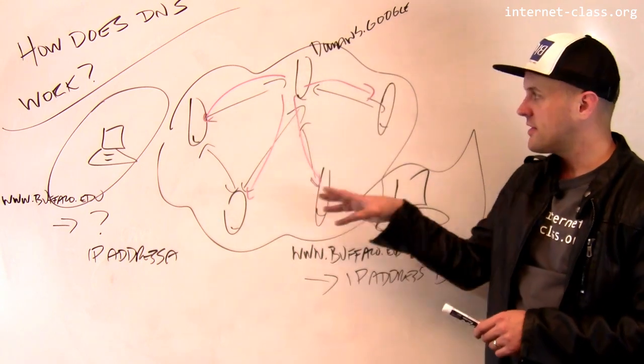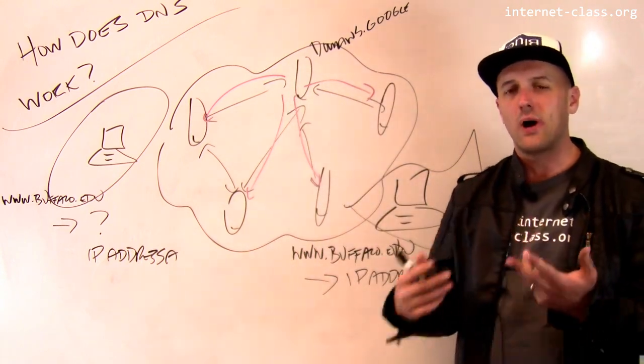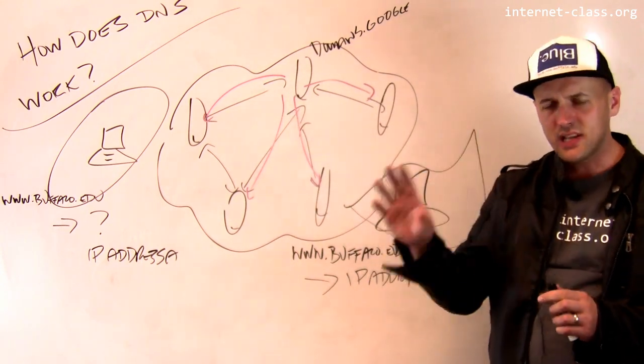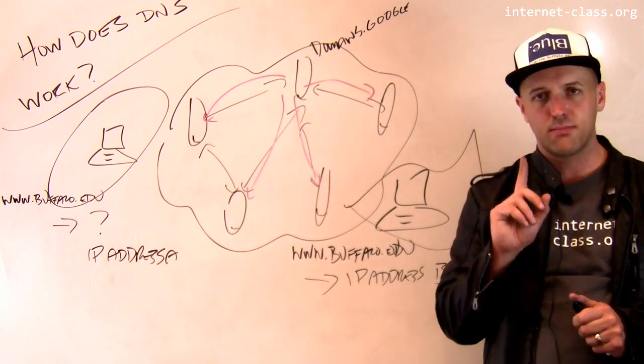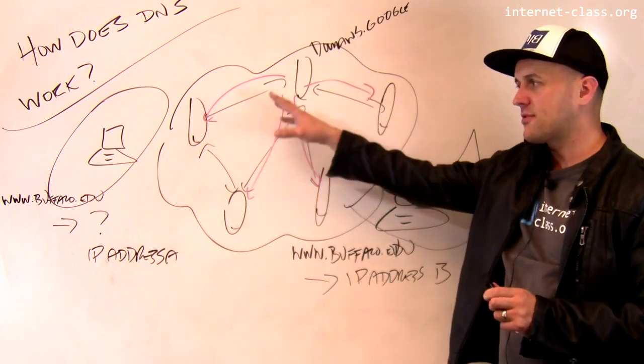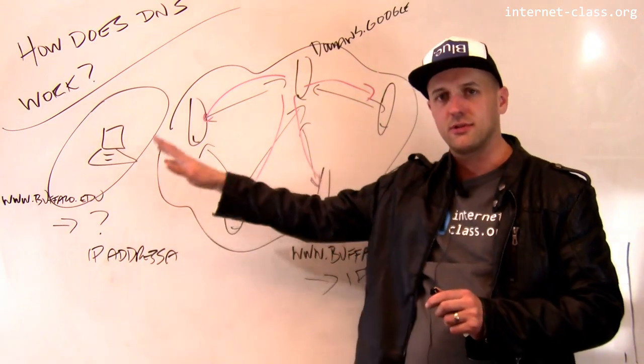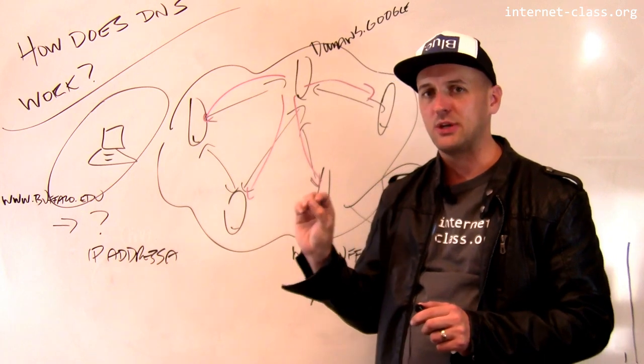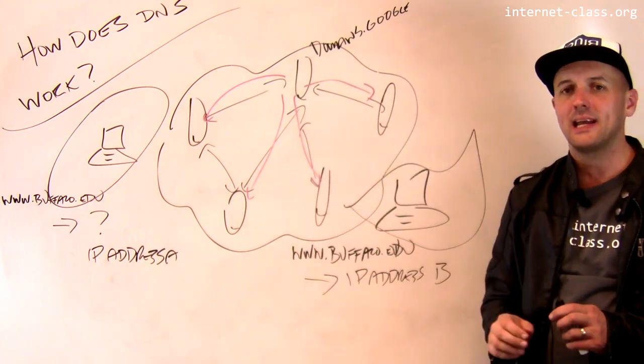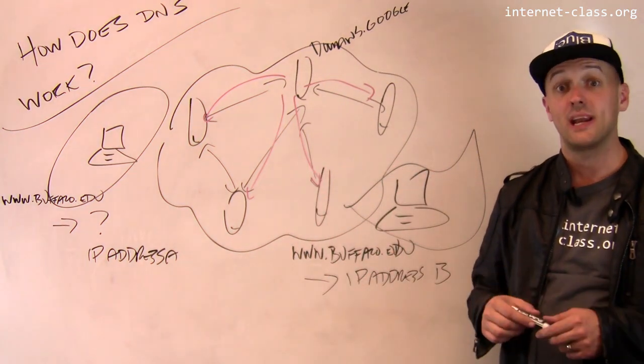So the domain name service, a bunch of computers all over the world cooperating to translate names, somewhat similar to a phone book with the important exception that the domain name service allows people to push content closer to the users by allowing the same domain name to be translated differently depending on where the request is originating.